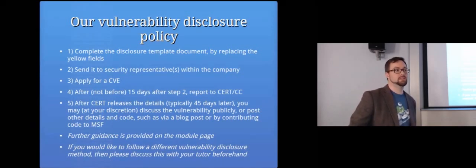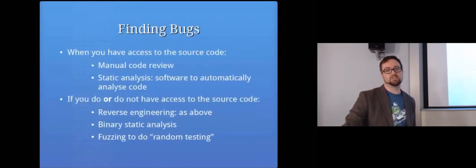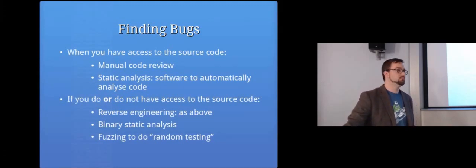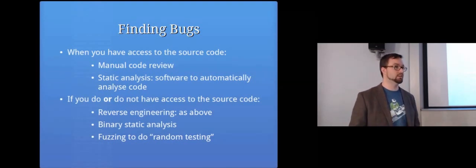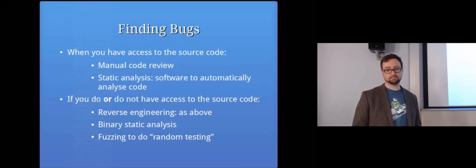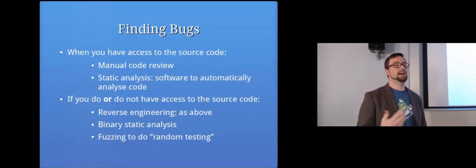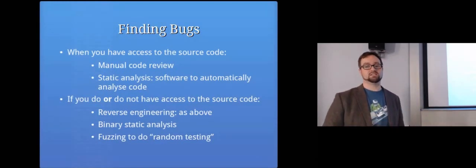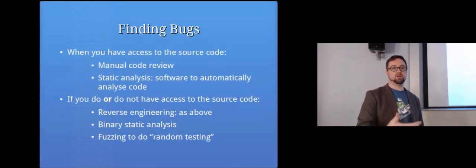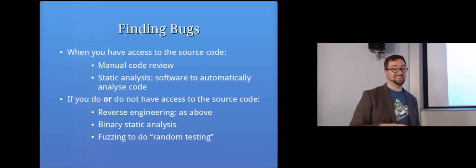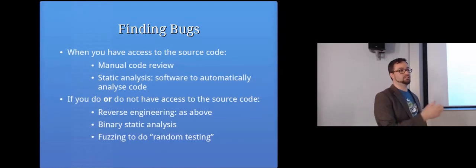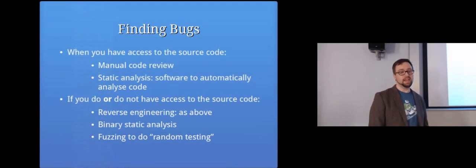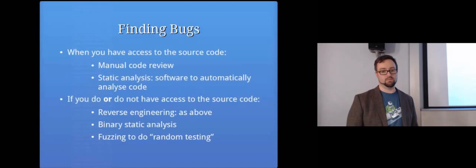So how do you go about finding a bug? If you have access to source code, you can read it carefully and spot known types of security vulnerabilities. There's also static analysis, where software automatically analyzes code and looks for problems. Without source code, you can do reverse engineering — taking a binary of a program and figuring out what it does. You can use a disassembler to generate something approximating source code, then run that through a static analysis tool. You can also do fuzzing, which involves random testing.